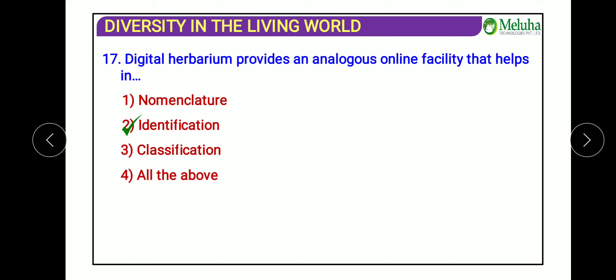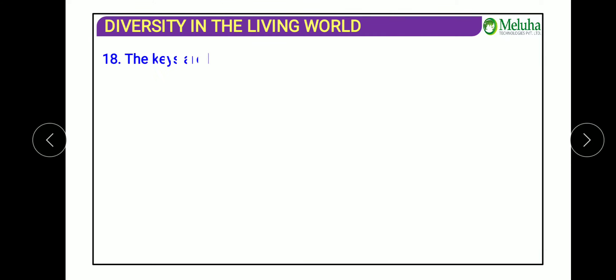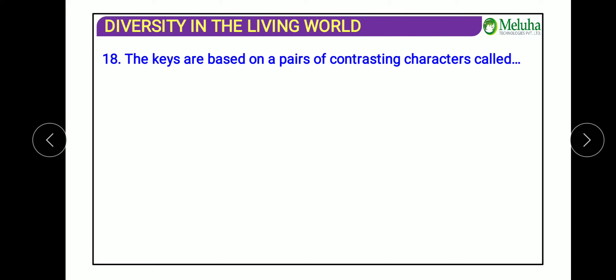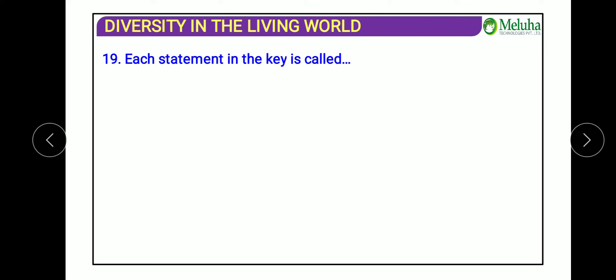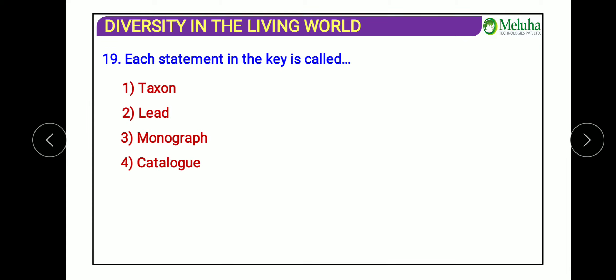The next question: keys are based on pairs of contrasting characters called what? The answer is couplets. Each statement in the key is called a lead. A monograph has information of a single taxon existing in a given area. A catalog is the alphabetical arrangement of species in a given area. So the answer to 'each statement in the key' is lead.